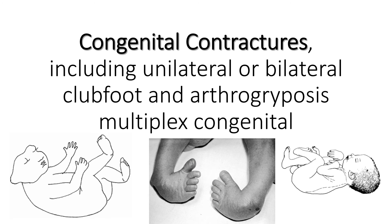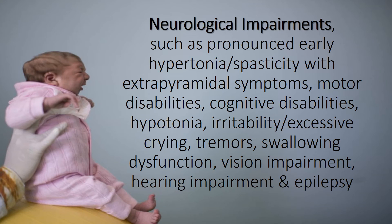Congenital contractures including unilateral or bilateral clubfoot and arthrogryposis multiplex congenita. Neurological impairments such as pronounced early hypotonia, spasticity with extrapyramidal symptoms, motor disabilities, cognitive disabilities, hypotonia, irritability, excessive crying, tremors, swallowing dysfunction, vision impairment, hearing impairment, and epilepsy.